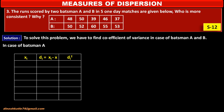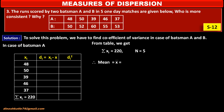The given values of xi for batsman A sum to: summation xi equals 220. The number of observations n equals 5. Therefore, mean x̄ equals summation xi upon n, which is 220 upon 5, which equals 44.